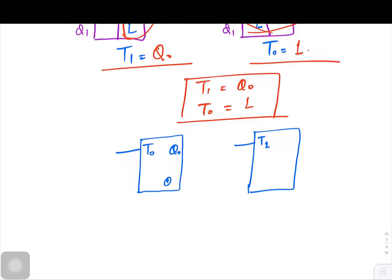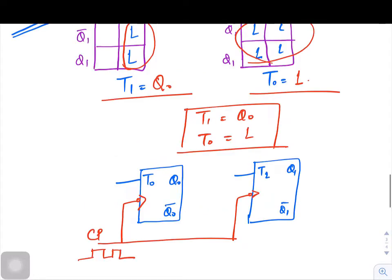Then it is Q naught and Q naught bar, Q1 and Q1 bar. Now one thing is here: since this is synchronous, clock would be given simultaneously to both the flip-flops. Then what we get from this K-map is the flip-flop inputs.